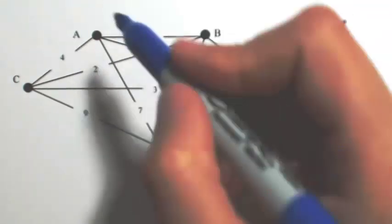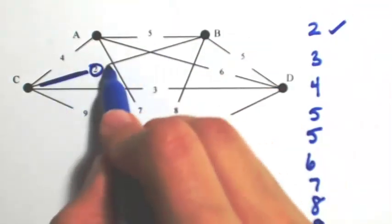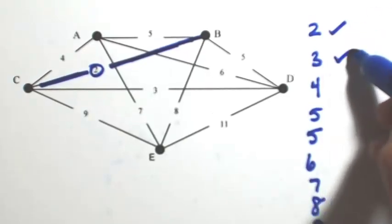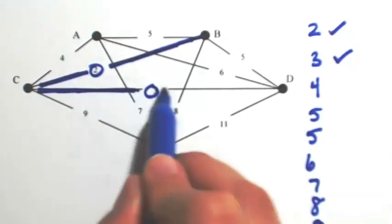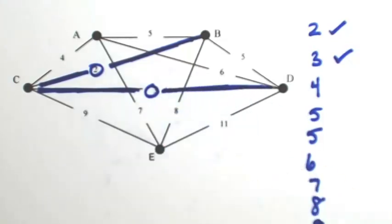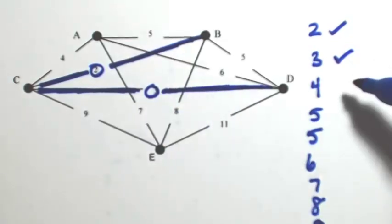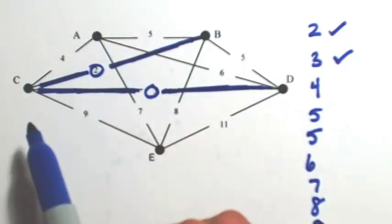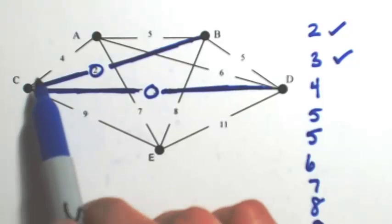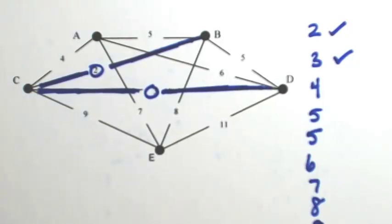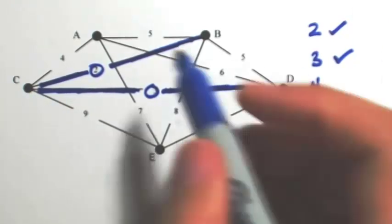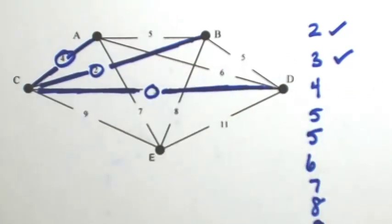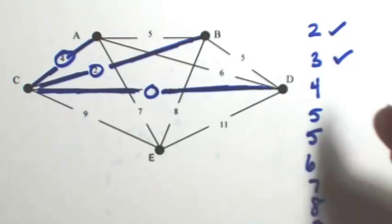So the first one will always be used. The second one would also always be used. You'll never make a circuit. Number 4 will be used because it's not creating a circuit. It's okay to have more than two edges coming out of a vertex. We're not using sorted edges algorithm. We're not trying to create a Hamiltonian circuit, so it's okay to visit C more than once.